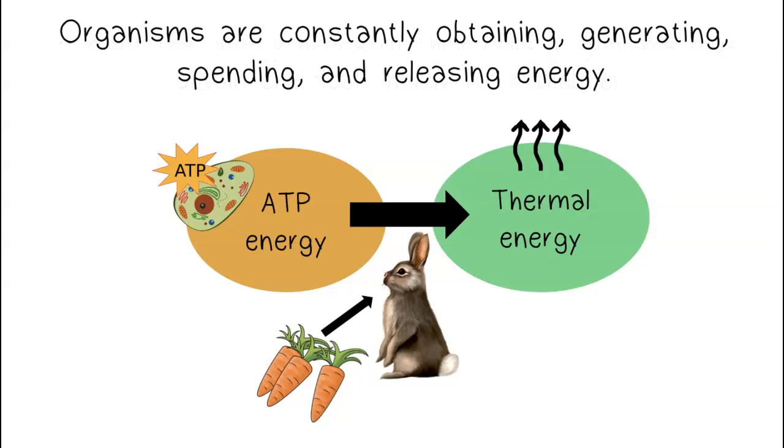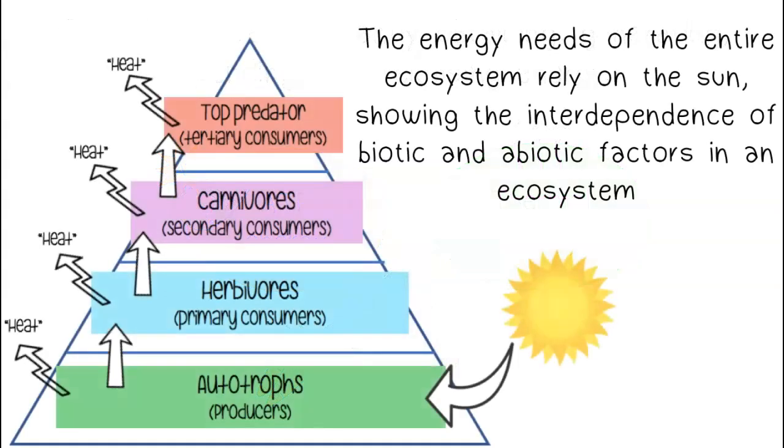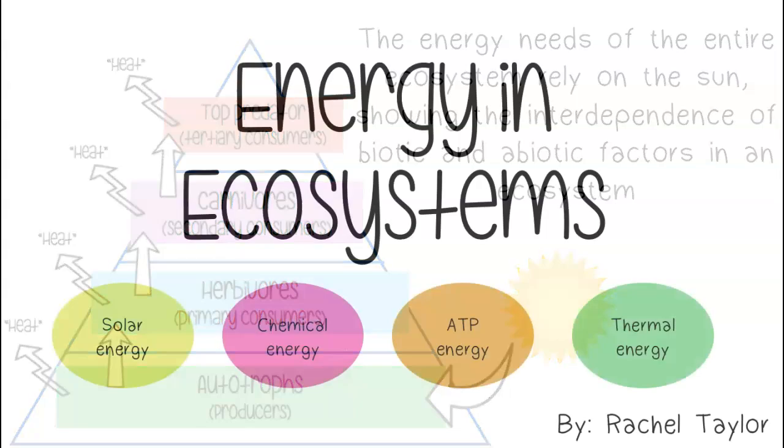Organisms are constantly obtaining, generating, spending, and releasing energy. The energy needs of the entire ecosystem rely on the sun, showing the interdependence of biotic and abiotic factors in an ecosystem.